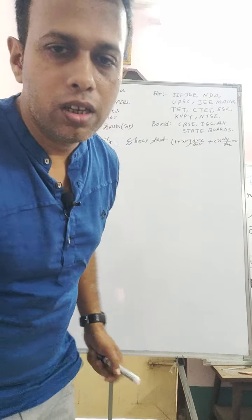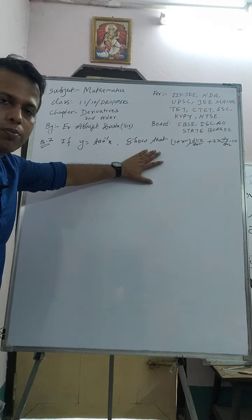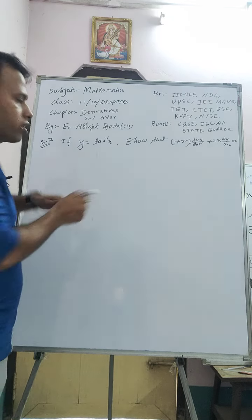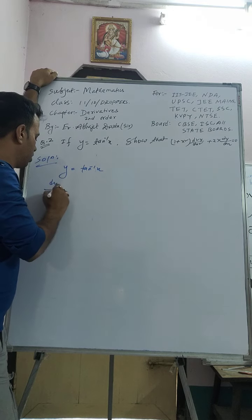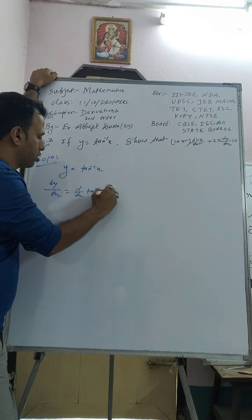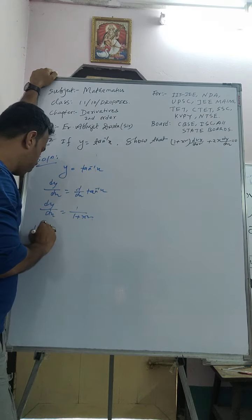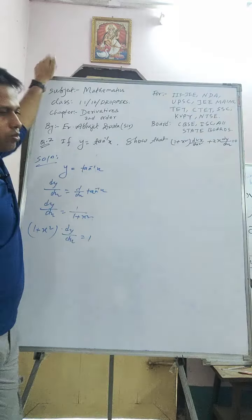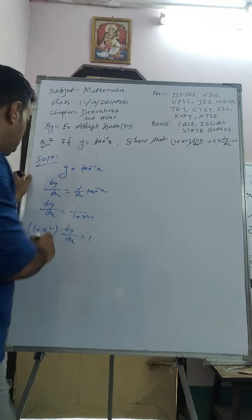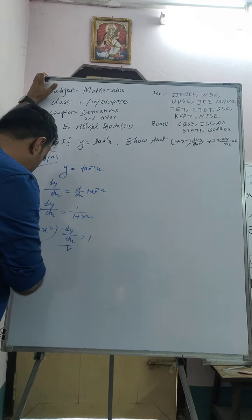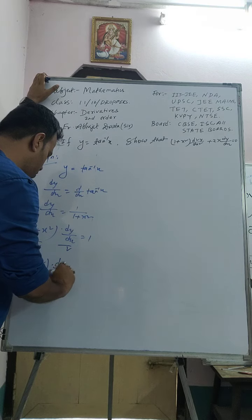Now the next question, the second question on second order derivatives: if y = tan⁻¹(x), prove that (1 + x²)·d²y/dx² + 2x·dy/dx = 0. Let's try. Given y = tan⁻¹(x). Differentiating with respect to x: dy/dx = 1/(1 + x²). Cross multiplying: (1 + x²)·dy/dx = 1. Call this equation B.